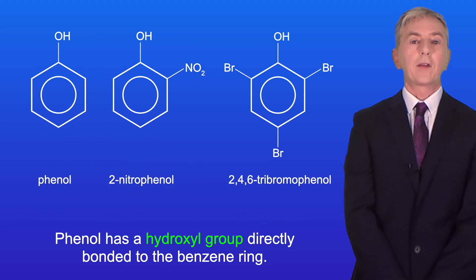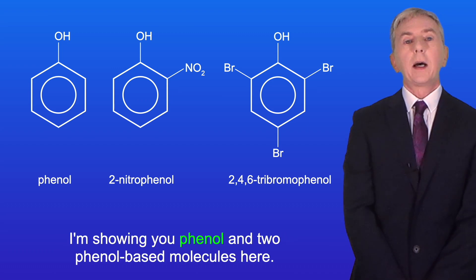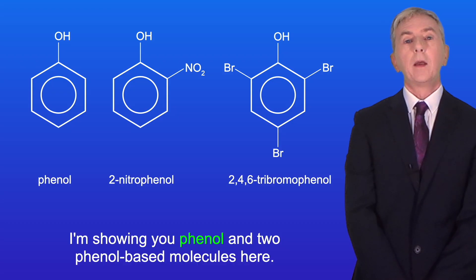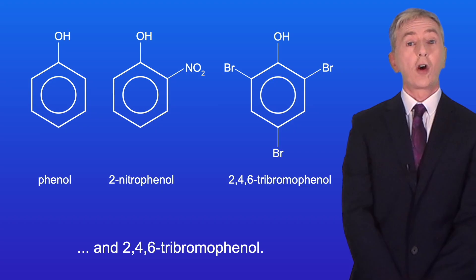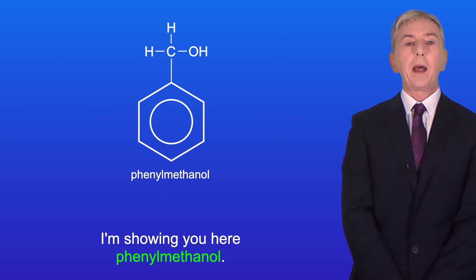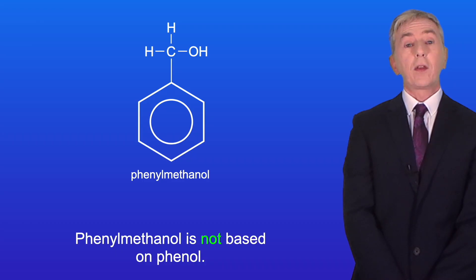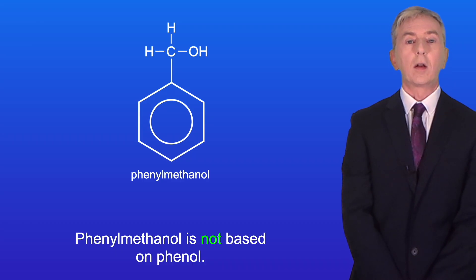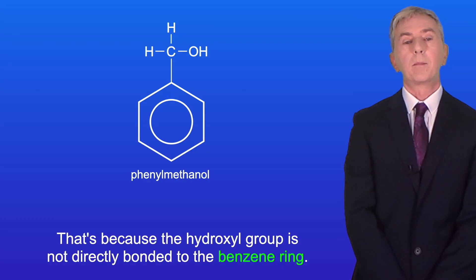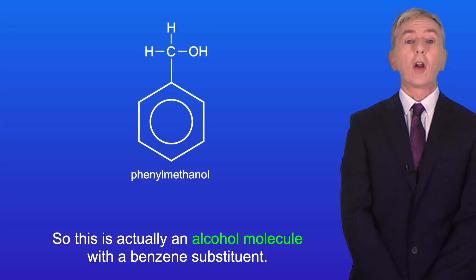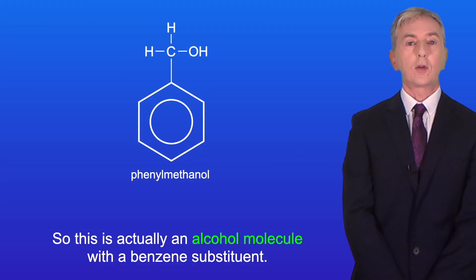Phenol has a hydroxyl group directly bonded to the benzene ring. Here I'm showing you phenol and two phenol-based molecules: 2-nitrophenol and 2,4,6-tribromophenol. I'm also showing you phenyl methanol, which is not based on phenol because the hydroxyl group is not directly bonded to the benzene ring. So phenyl methanol is actually an alcohol molecule with a benzene substituent.